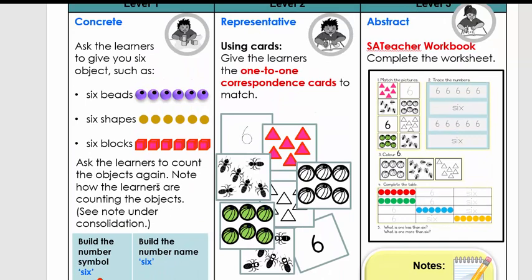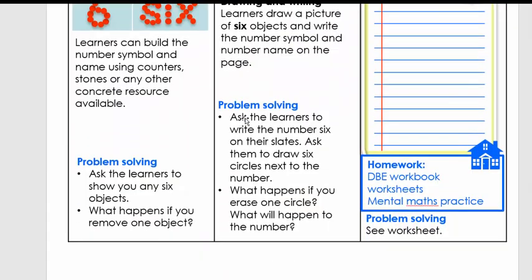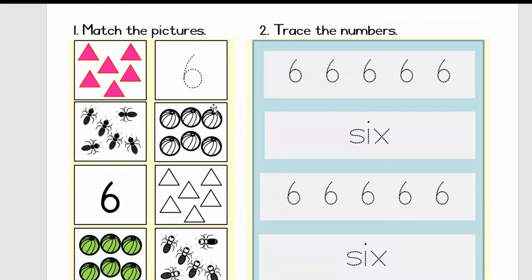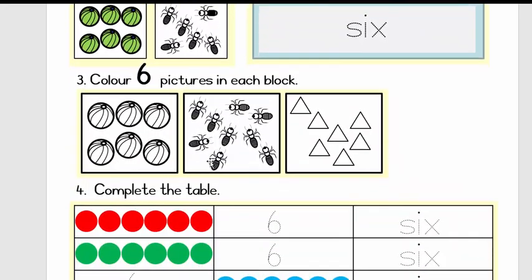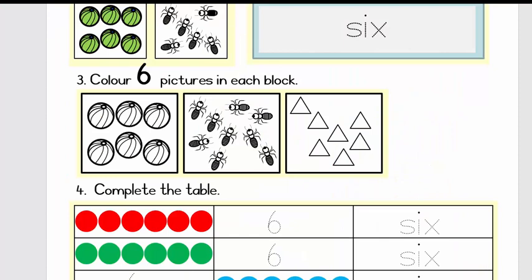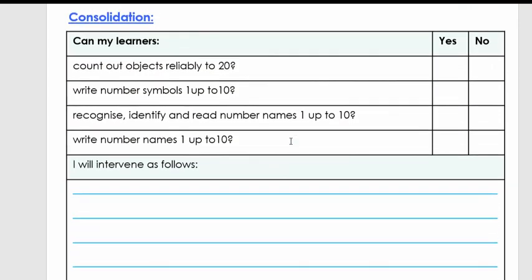So what we're going to do, and what you already have done, is you have packed things out. So you were touching certain things and you were counting in six. Then what you did is you made some drawings, and what you're going to do now is you're going to complete a worksheet. Now you've got two options: you can go to the SA Teacher worksheet and you can print it out, or you can use your DBE worksheet.